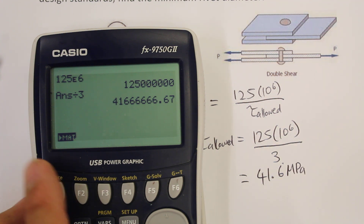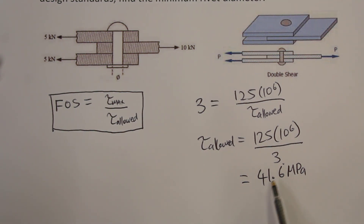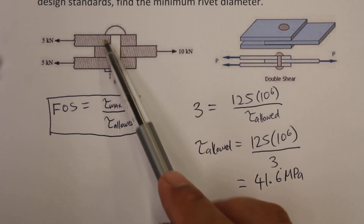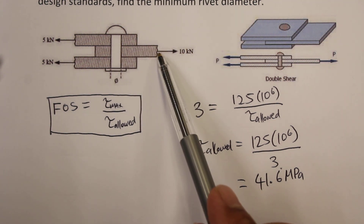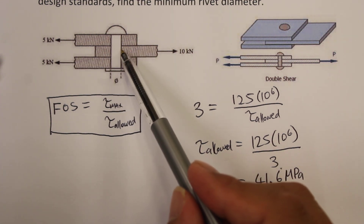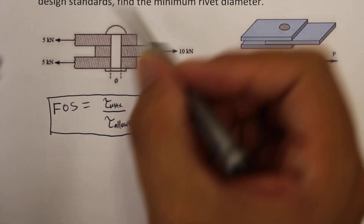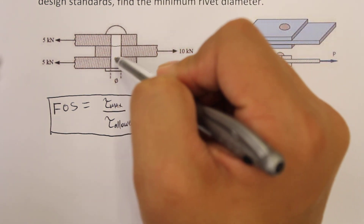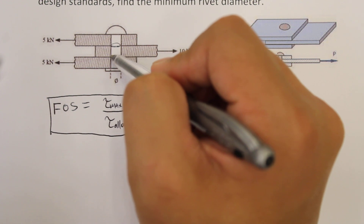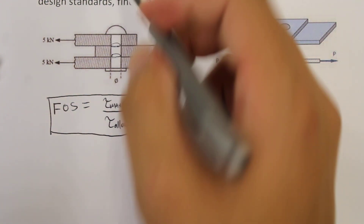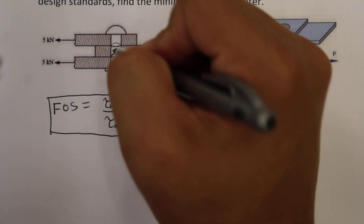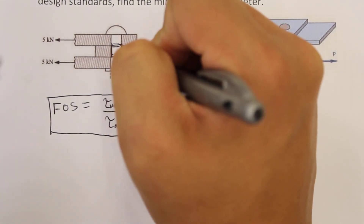Now that we know the allowed stress, we can look at the actual situation of what's going on here. If we look at this rivet, we'll see there's a 10 kilonewton force trying to go towards the right. That will try to pull the rivet towards the right and will effectively try to cut the bolt through this section here and through this section here. So we say that this bolt is in double shear, because there are two sections of that bolt which are being cut through.